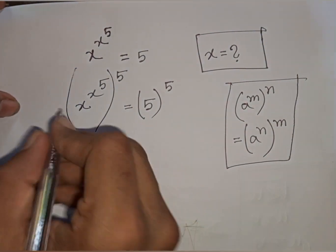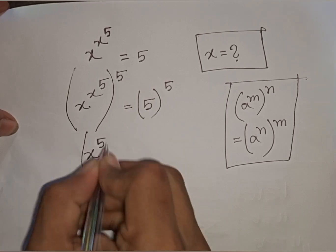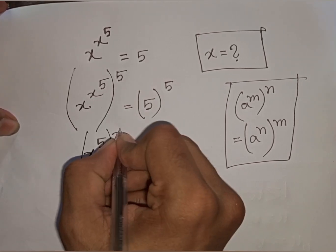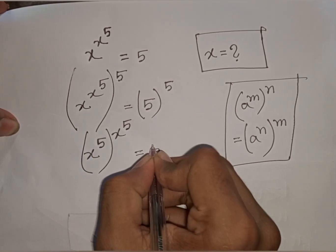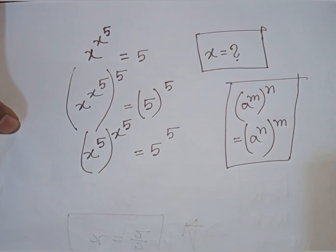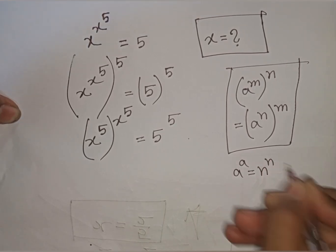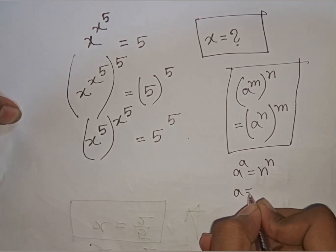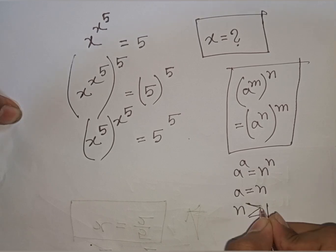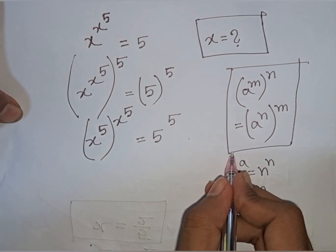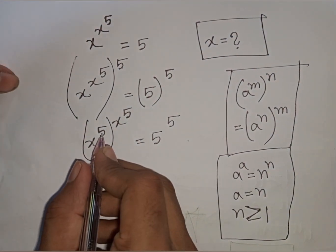So according to this rule, you can write here: x power 5, then bracket power of x to the power 5, is equal to 5 power 5. Now here I can apply the rule that a power a is equal to n power n, so a will be equal to n, where n is greater than or equal to 1. According to this rule I can compare here: x power 5 will be equal to 5.